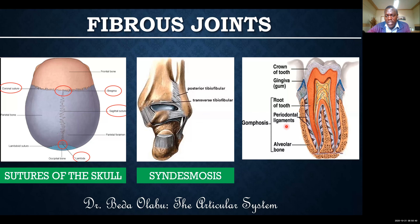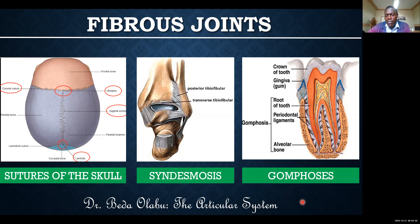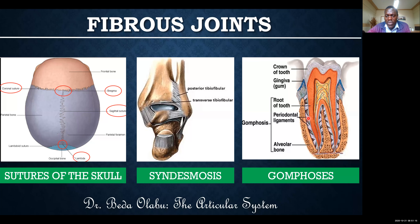The third category of fibrous joints are what we call gomphosis. You call a joint gomphosis if it is a joint between teeth and the jaw. The teeth are strongly held to the jaw — what holds the teeth to the jaw is actually a joint. There are strong ligaments that join teeth to the jaw, and this constitutes the gomphosis — fibrous joints between teeth and jaw.